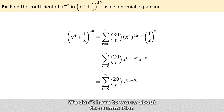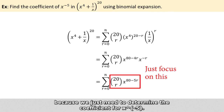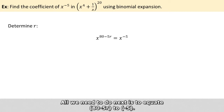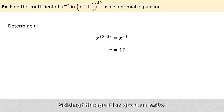We don't have to worry about the summation because we just need to determine the coefficient for x raised to the power of minus 5. So all we need to do next is to equate 80 minus 5r to minus 5. Solving this equation gives us r equals 17.